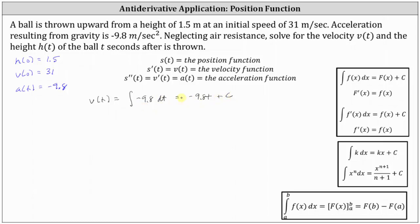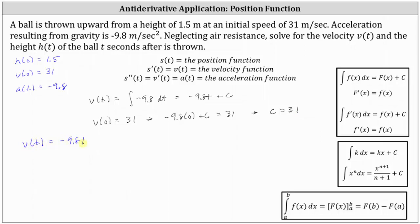Since this is the form of the velocity function, we can now determine the constant of integration, since we know v of zero is equal to 31. If we substitute zero for t, the velocity function must equal 31, which gives us negative 9.8 times zero plus C equals 31. Simplifying, we have C equals 31. So now we know the exact velocity function is v of t equals negative 9.8 t plus 31. This is the first part of the question.